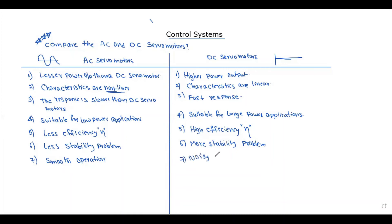Next point: DC servomotors have noisy operation, whereas AC servomotors produce comparatively less noise. Also, AC servomotors have no drift, whereas DC servomotors have drift.